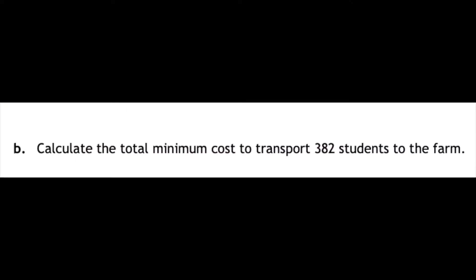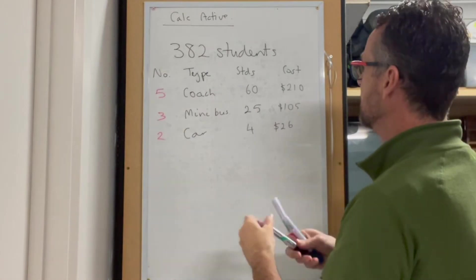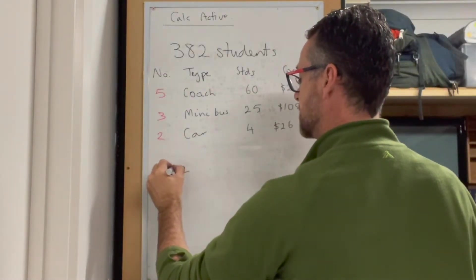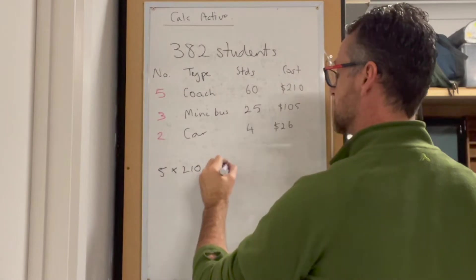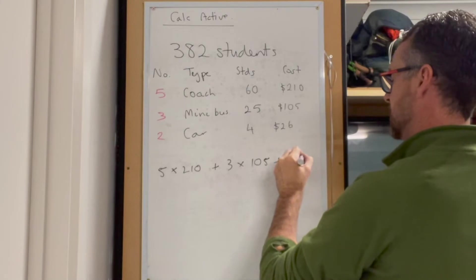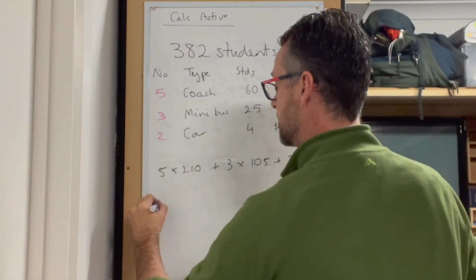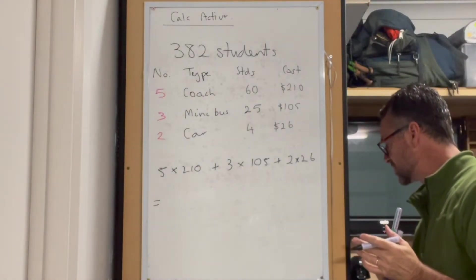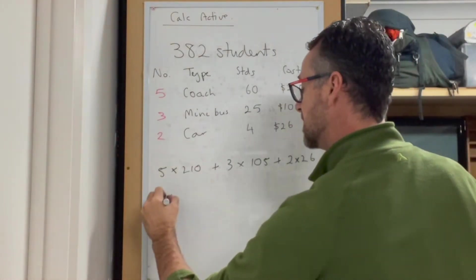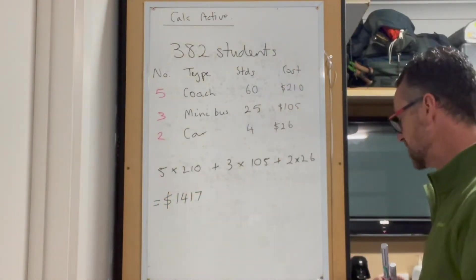Now calculate the cost: 5 times 210 plus 3 times 105 plus 2 times 26. This is a calc active paper, so we can use our calculator, which gives us $1,417 as our total expenditure.